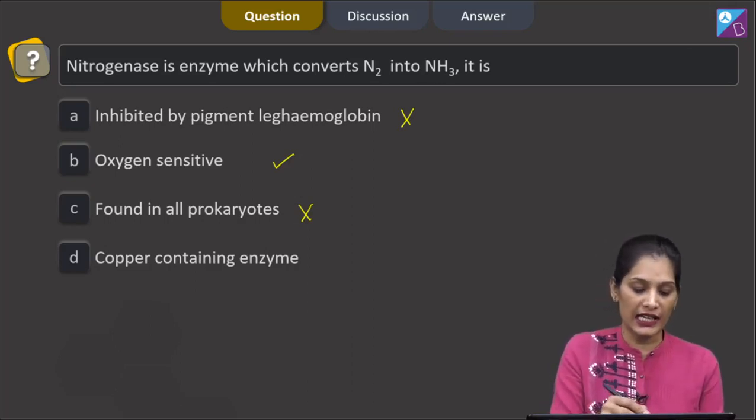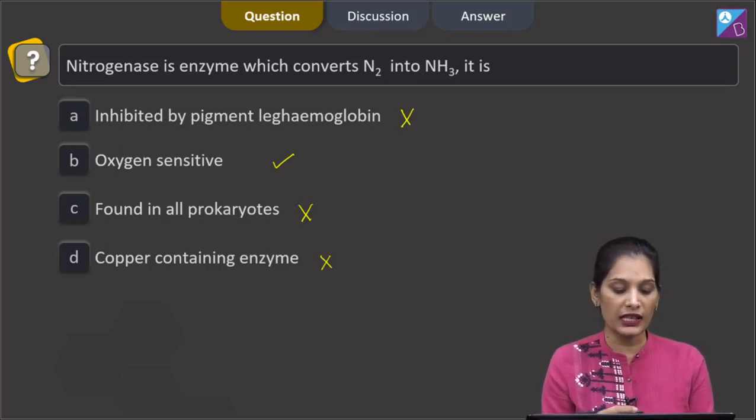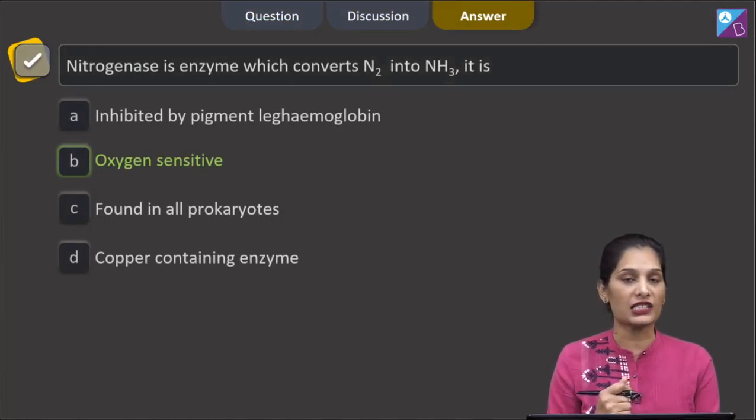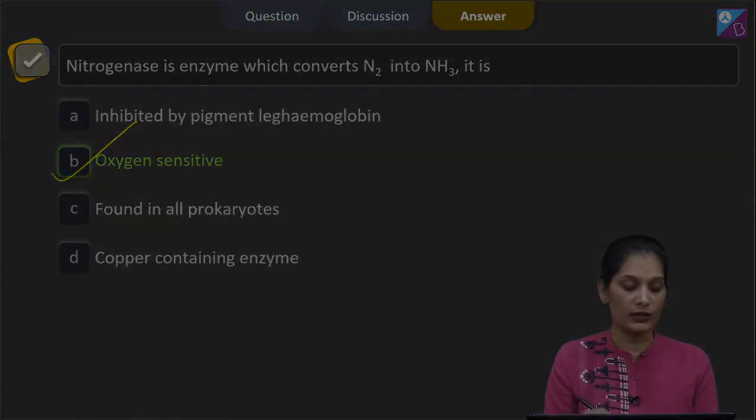It is found in some prokaryotes and these prokaryotes are called the nitrogen fixers. D, copper containing enzyme? No. This is iron molybdenum enzyme. This is not copper containing enzyme. So the correct option for the given question is option B, that nitrogenase is oxygen sensitive.